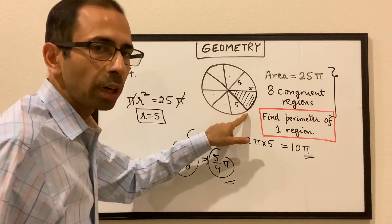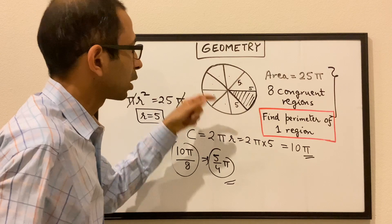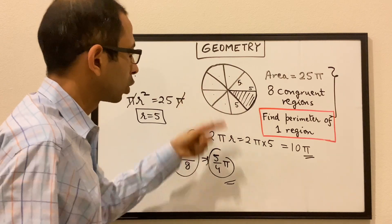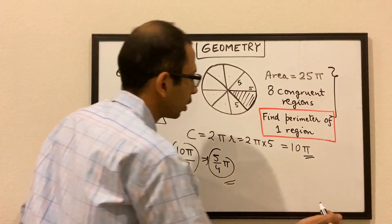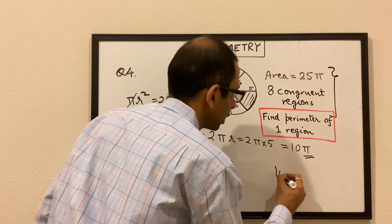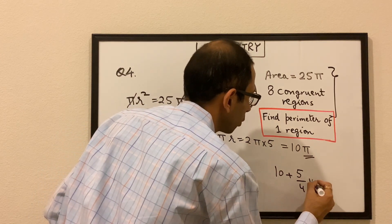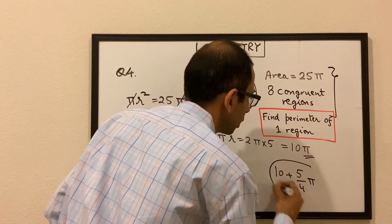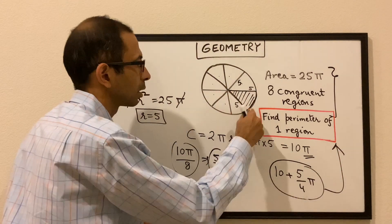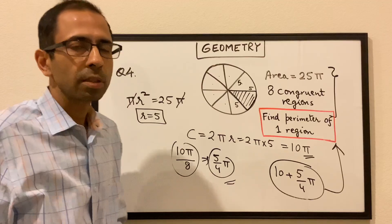This straight length is 5 because that's the radius, and this is also 5. So 5 plus 5 is 10, plus 5π/4. The overall perimeter would be 10 plus 5π over 4. This is the overall perimeter of one of the regions.